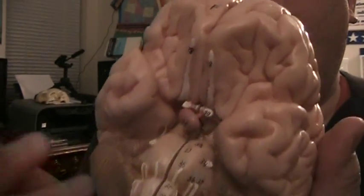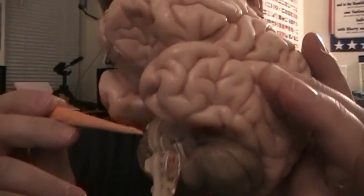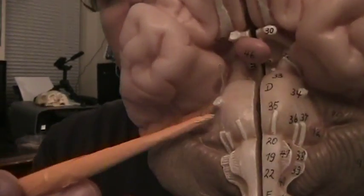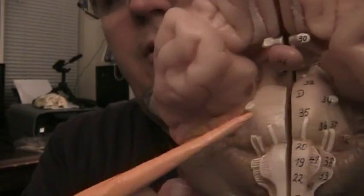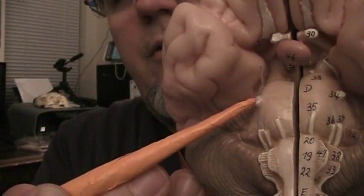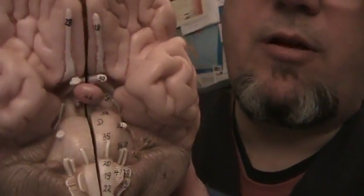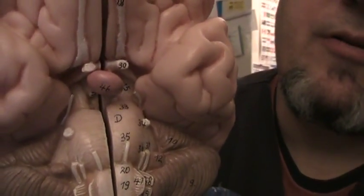The pons, cranial nerve number 5. You can tell the anterior swelling of the pons, you can see right here cranial nerve number 5, the largest cranial nerve, trigeminal nerve, with three branches: V1, V2, V3. V1 ophthalmic branch, V2 maxillary branch, and V3 mandibular branch.